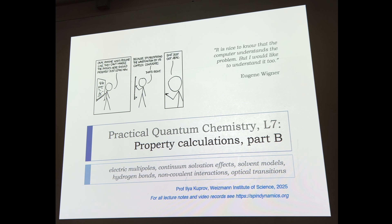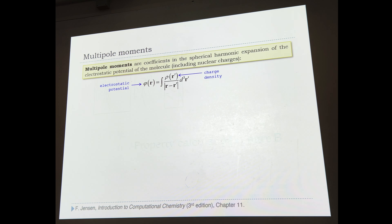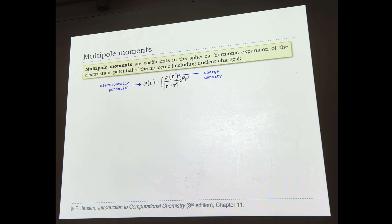Dealing today with electrostatics, and therefore necessarily, via chemists, solvent interactions. I will remind you what the standard description of molecular electrostatics is based on. It is normally referring to things like multipole moments, charge distributions, and charge densities. We start in the usual place with the Coulomb equation or the electrostatic potential — that is your charge density, that is the distance from every point of the charge density, and an integral of the density gives you the electrostatic potential.